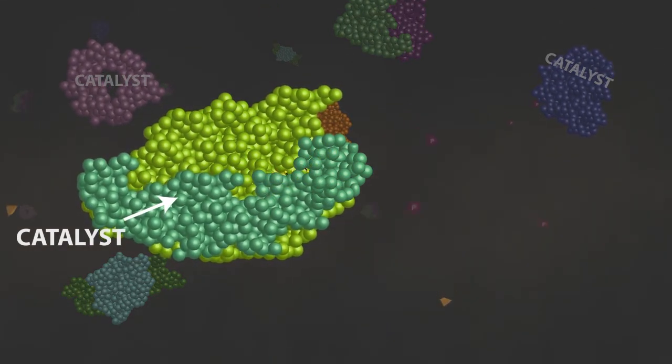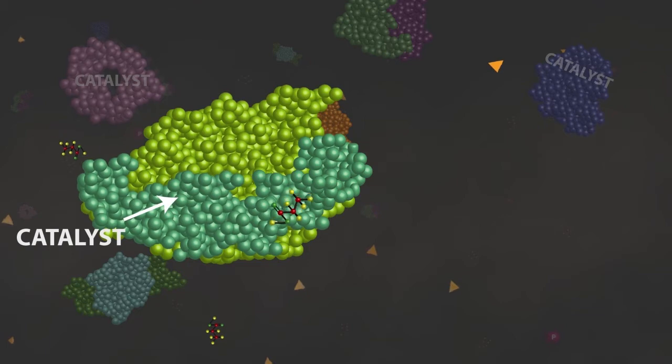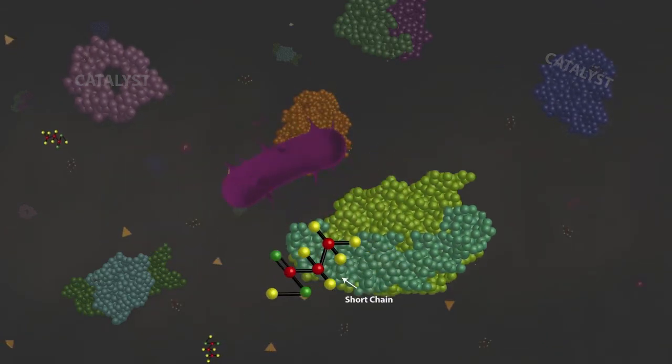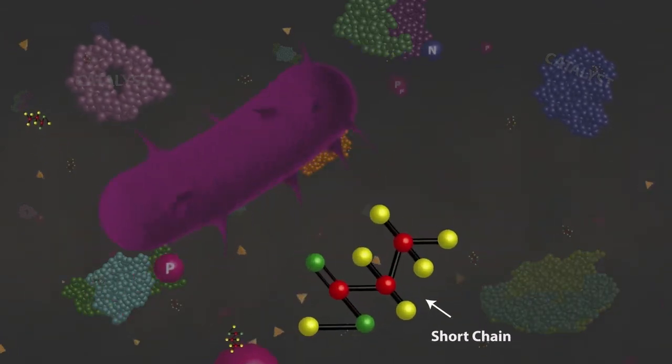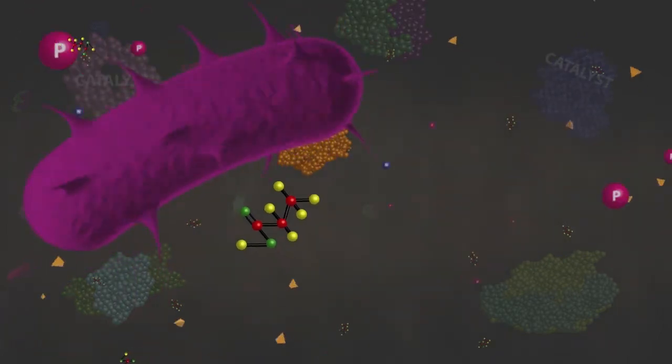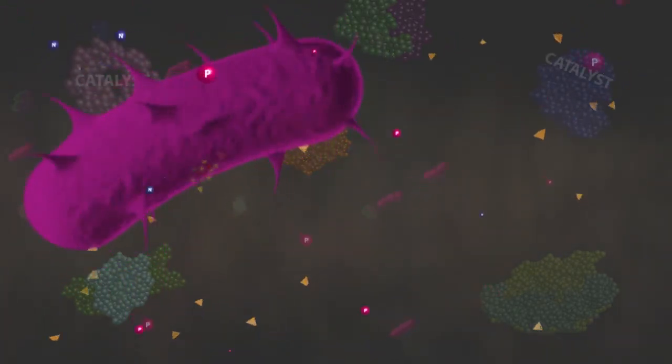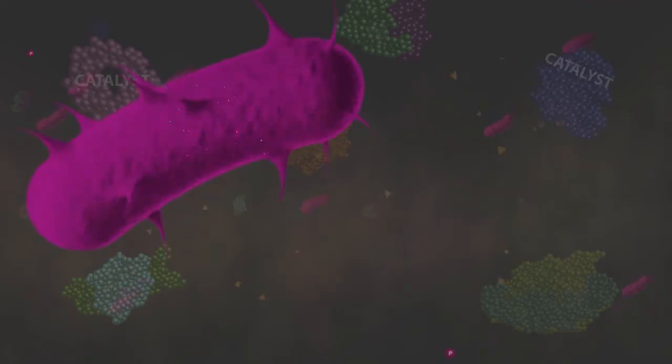And this process doesn't just happen on one grease molecule, but on millions simultaneously. The grease molecule has now become helpful short-chain fatty acids. Bacteria in the plant uptake these fatty acids and in the process consume more nitrogen and phosphorus.